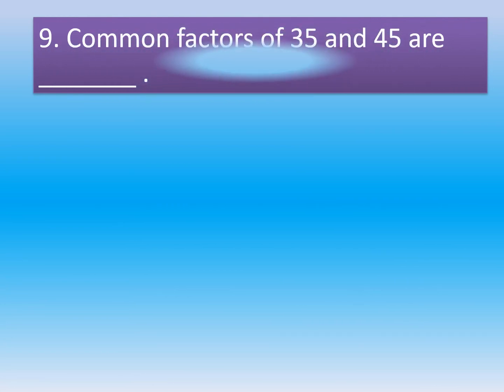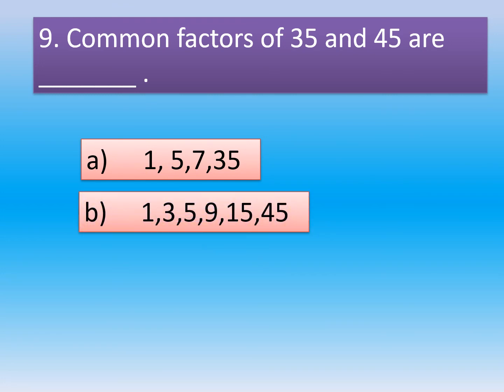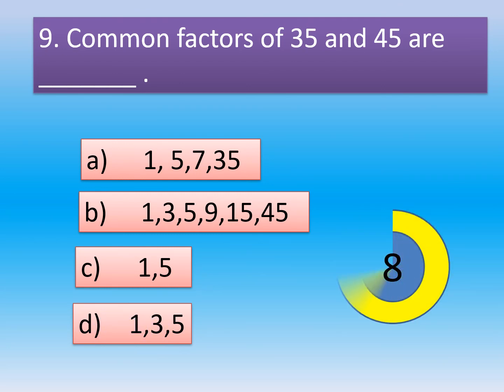Question number 9. Common factors of 35 and 45 are dash. Option A, 1, 5, 7, and 35. Option B, 1, 3, 5, 9, 15, and 45. Option C, 1 and 5. Option D, 1, 3, and 5.